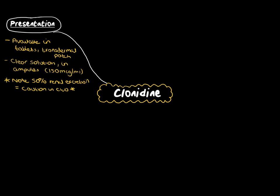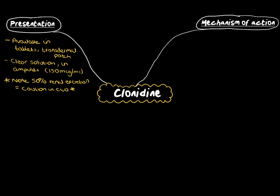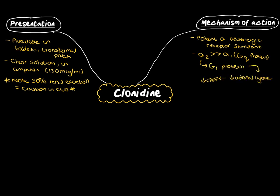Moving on to the mechanisms of action, clonidine is a potent alpha-adrenergic receptor stimulator. It is primarily an alpha-2 receptor stimulant, but it does have some action against alpha-1 receptors. The alpha-1 receptors are predominantly GQ-coupled G protein mechanisms, whereas the alpha-2 receptors are GI-coupled protein receptors, associated with inhibition of adenyl cyclase, which leads to a reduction in cyclic AMP.